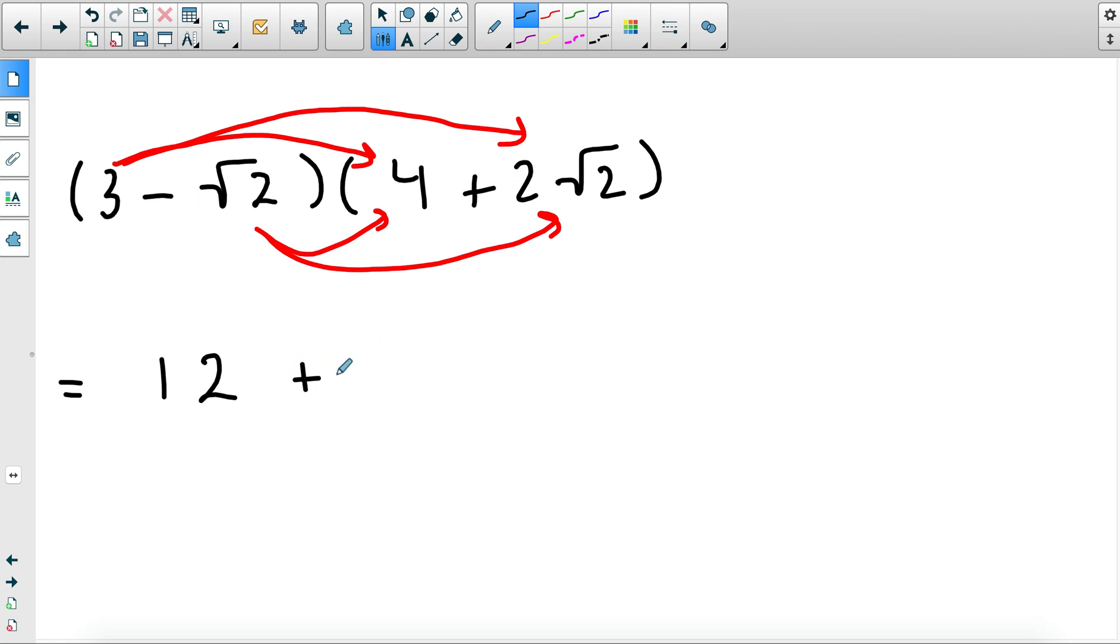Three times two square root of two will be a positive six square root of two. Then negative square root of two times four will be a negative four square root of two. And then positive and a negative—that's a negative. There's no coefficient so the two stays the same, and then I'm left with square root of two times square root of two which is times two, remember that.